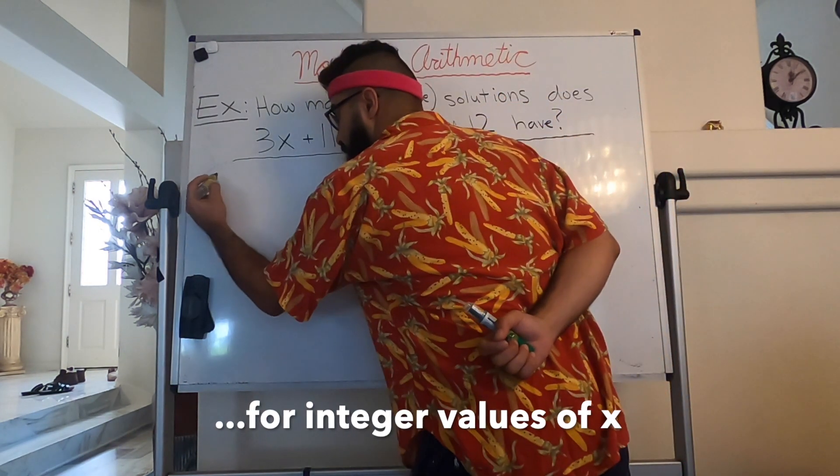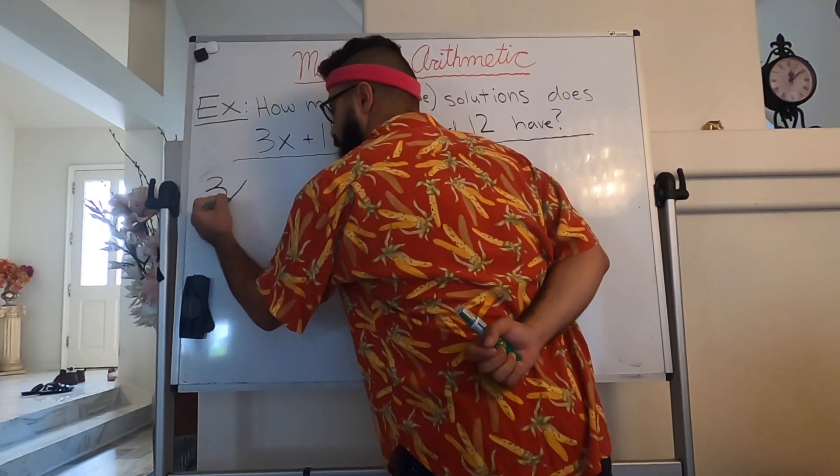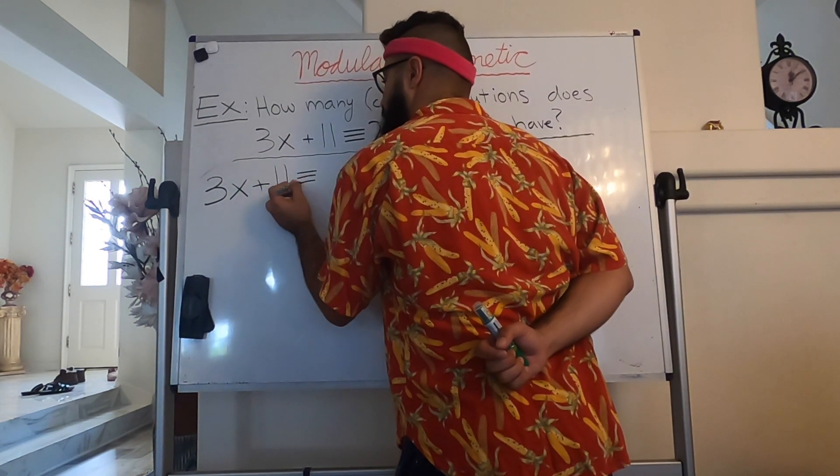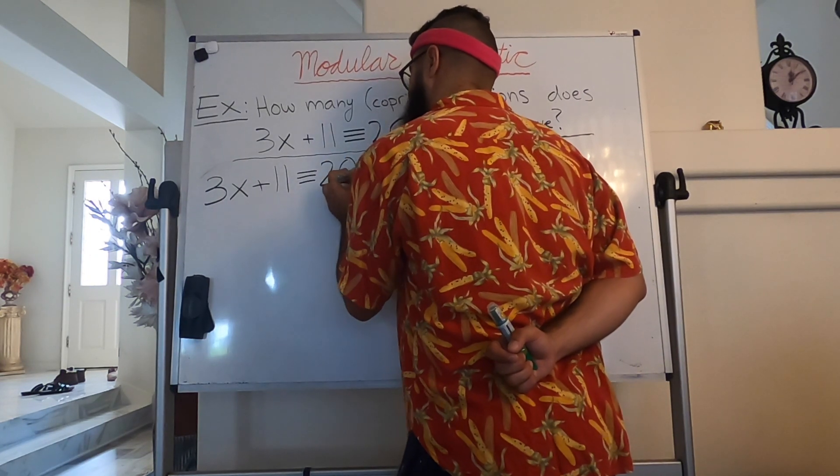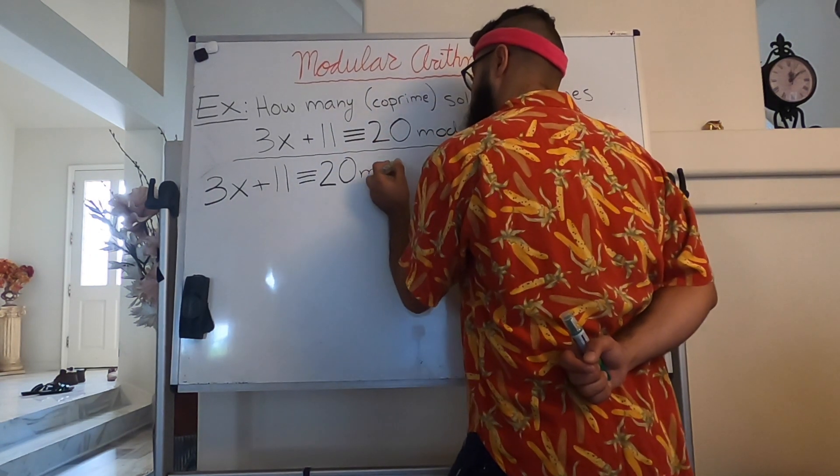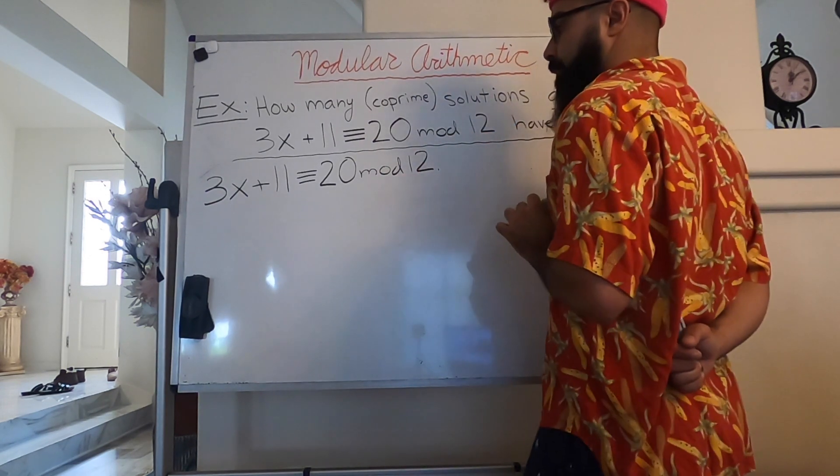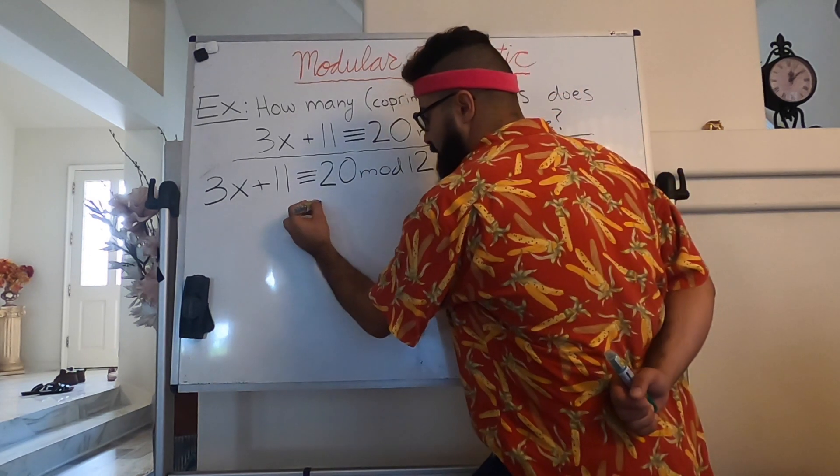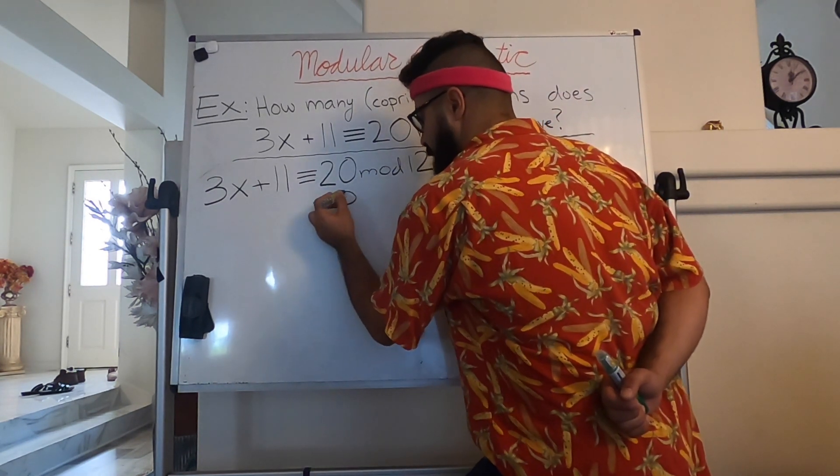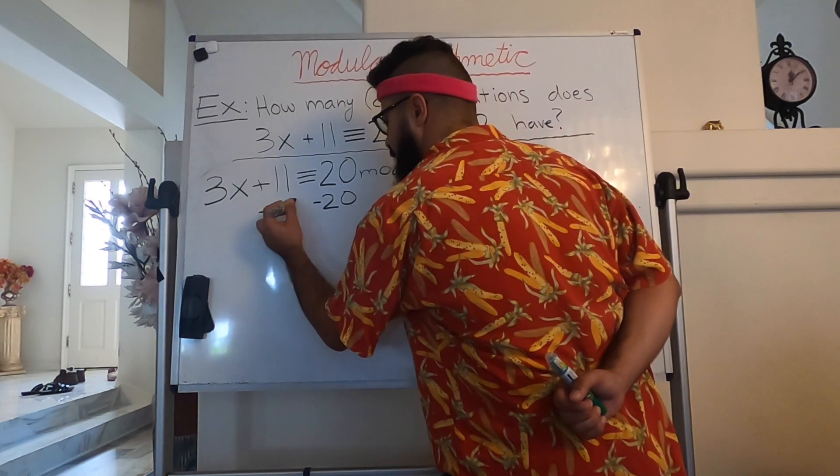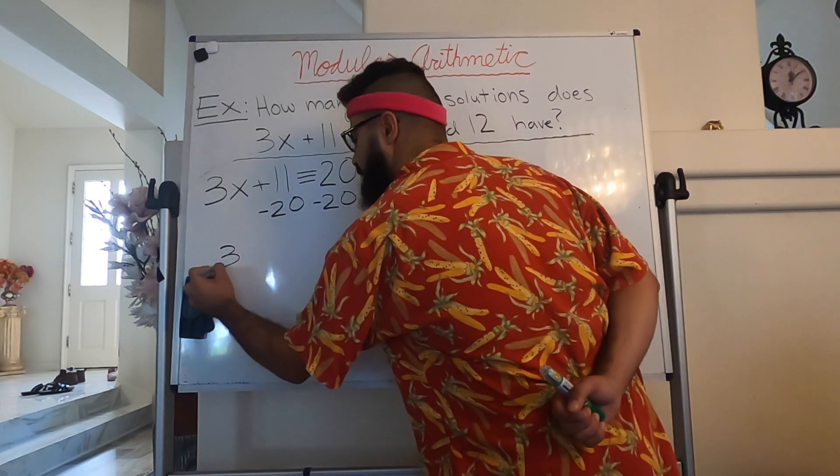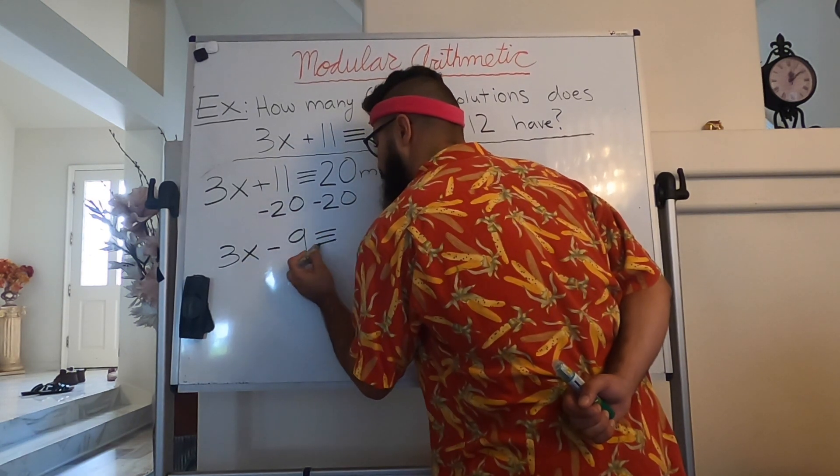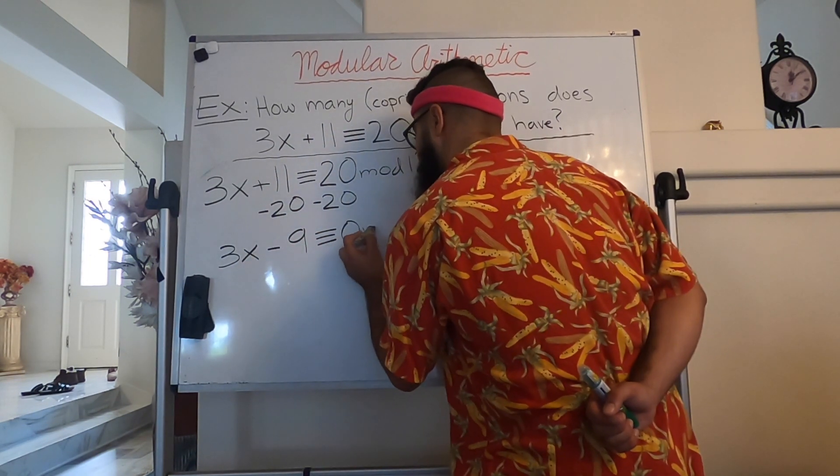So, 3x plus 1, we know, is congruent to 20 mod 12. We are allowed to use some of our regular rules from algebra, so we can minus 20 from both sides. Minus 20 here and minus 20 here. And we are left with 3x minus 9 is congruent to 0 mod 12.